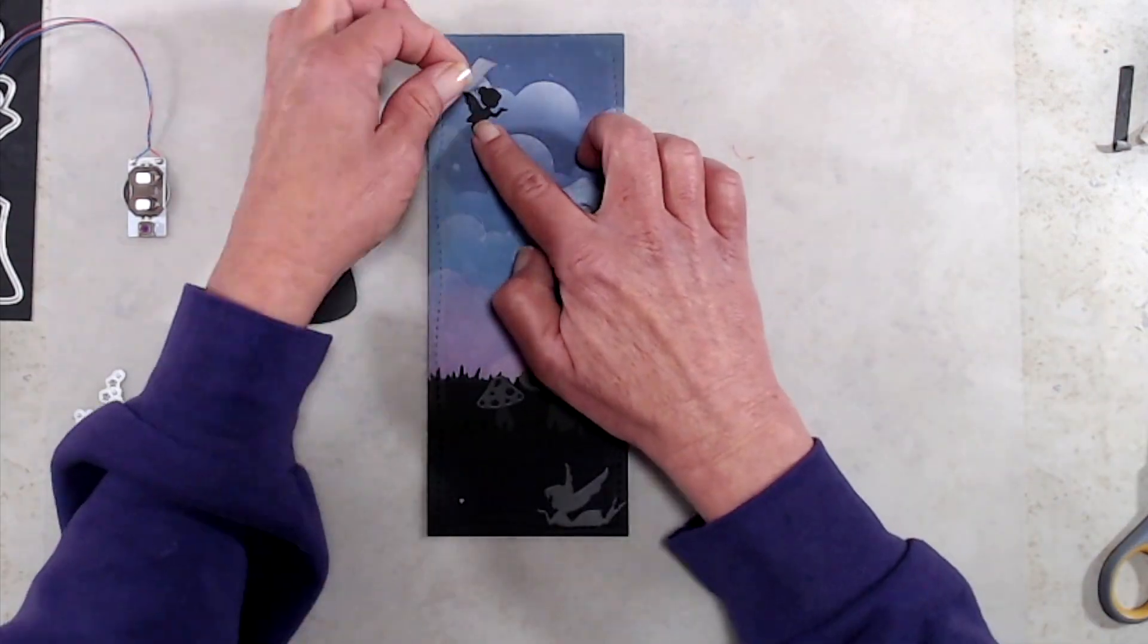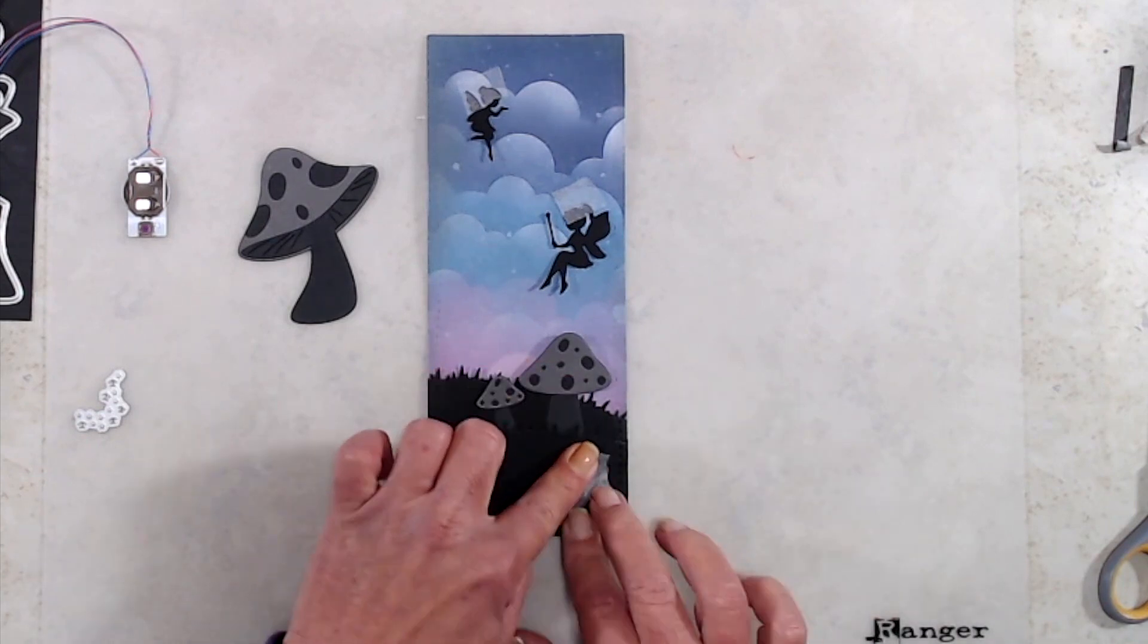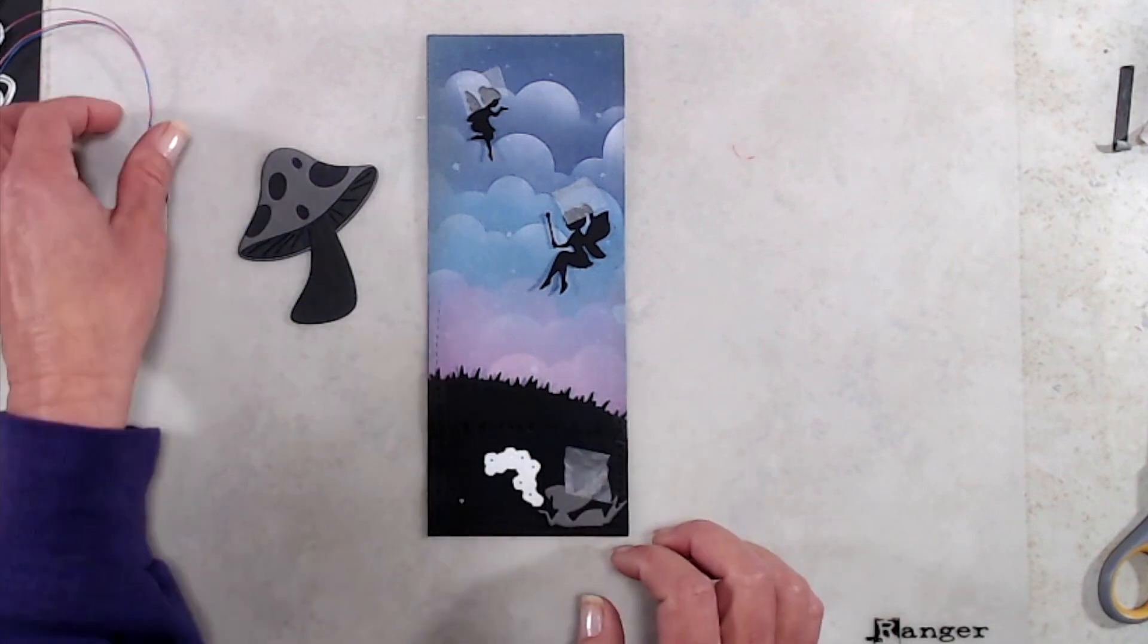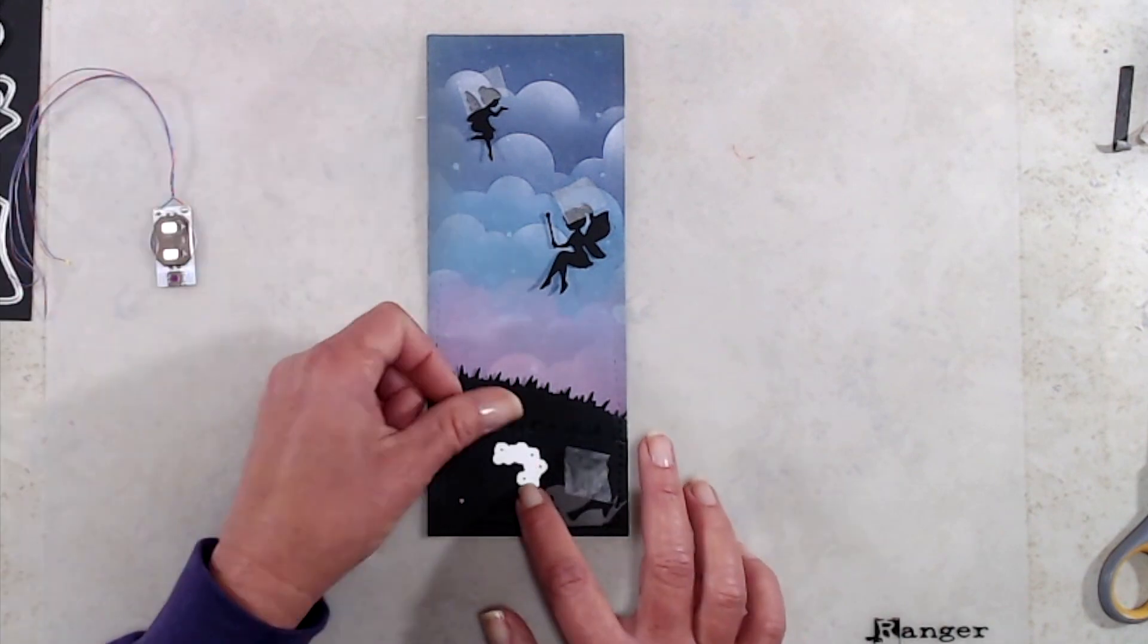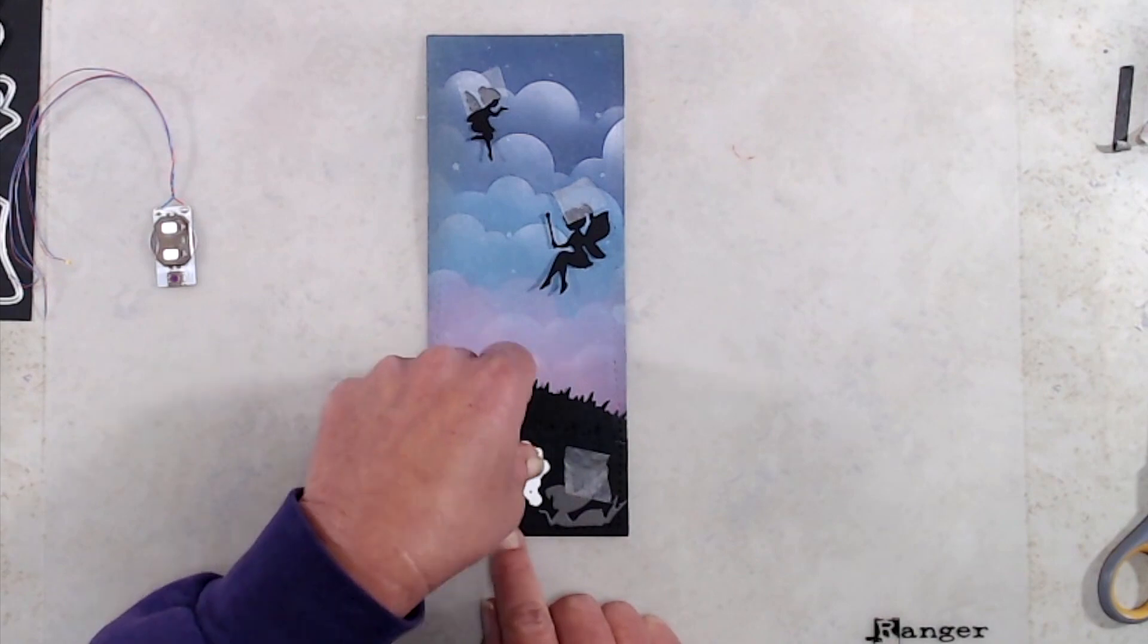By having that pencil mark there I would know where to die cut the fairy dust. I used Scotch Removable Tape just to hold the fairies in place so I would know where to die cut the fairy dust. After I had die cut all the fairy dust on the back side of my card panel...